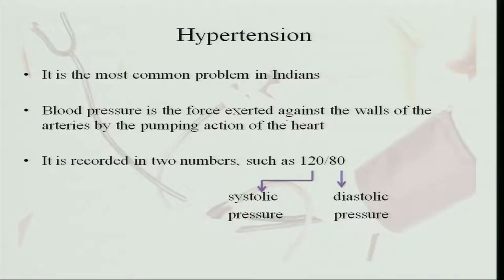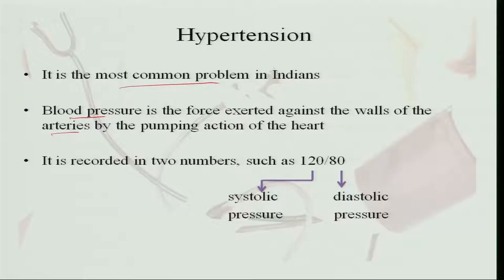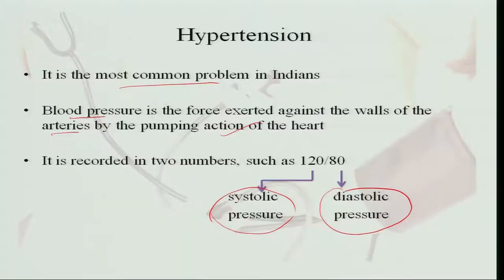The main initial problem or symptom we can see in heart disease is hypertension. This is the most common problem in Indians, and everybody above the age of 30-35 should be monitoring blood pressure to see whether any change occurs. Blood pressure is the force exerted against the walls of the arteries because of the pumping action of the heart. The normal blood pressure is 120 by 80, where 120 is the systolic pressure when the heart contracts and 80 is the diastolic pressure when the heart relaxes during pumping of the blood.